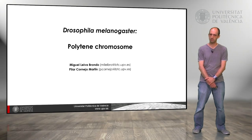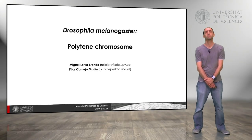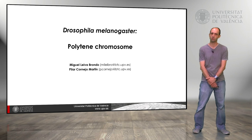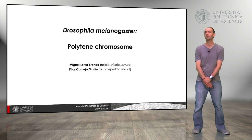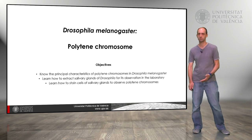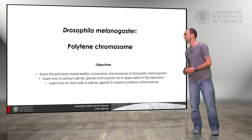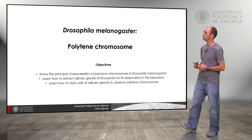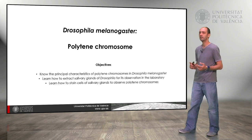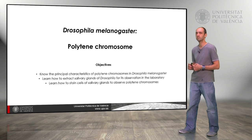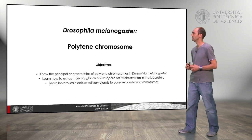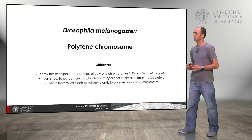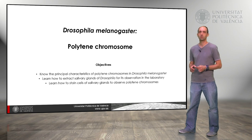Hello, my name is Miguel Leyva and with the help of Pilar Cornejo we are going to show you this learning object called Drosophila melanogaster polytene chromosomes. The main objective will be to know the principal characteristics of polytene chromosomes in Drosophila melanogaster, learn how to extract the salivary glands to observe them in the laboratory, and learn how to stain them to observe the polytene chromosomes.